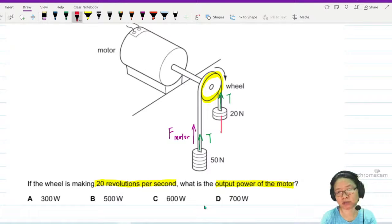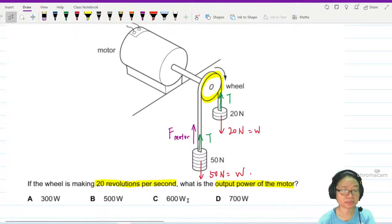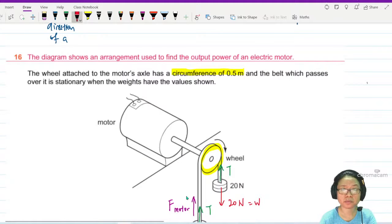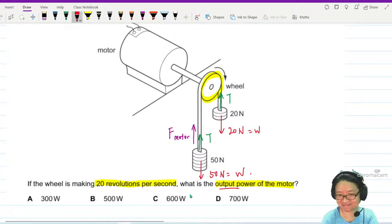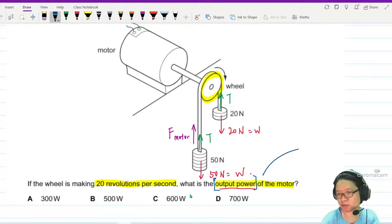The belt that is connecting the 20 and 50 N, because it's the same belt, it will also have the same tension. T here, T here. And don't forget, we got MG. So this is 20 N, the weight. This is 50 N, the weight. What are we looking for? I am looking for the value for power.